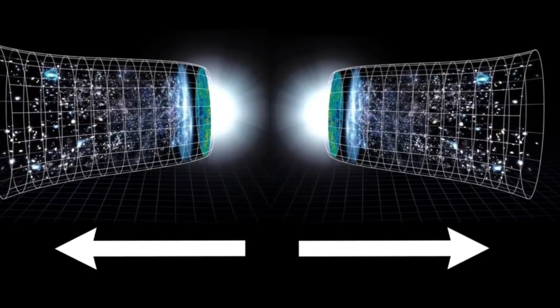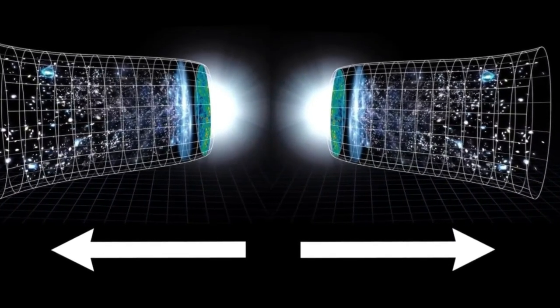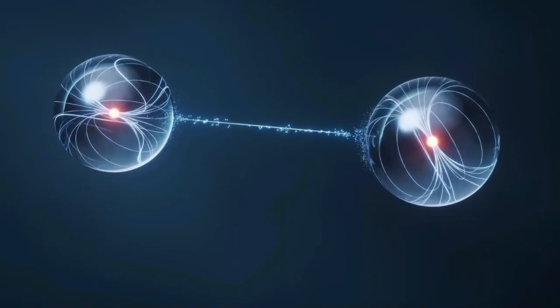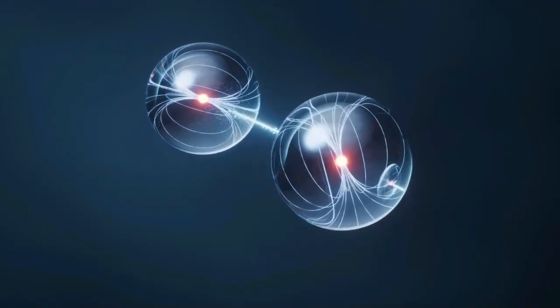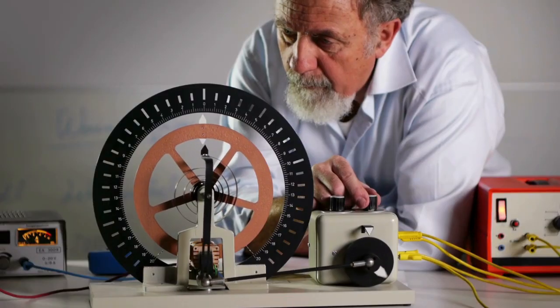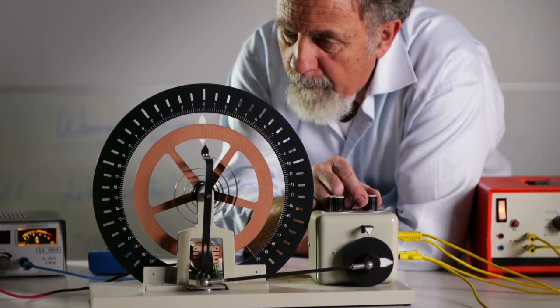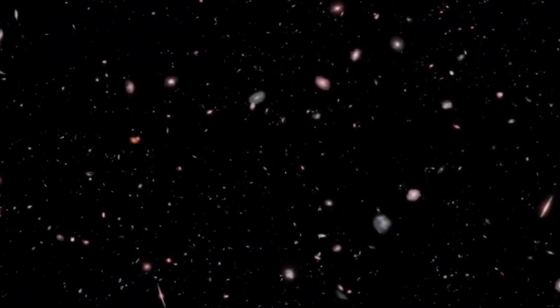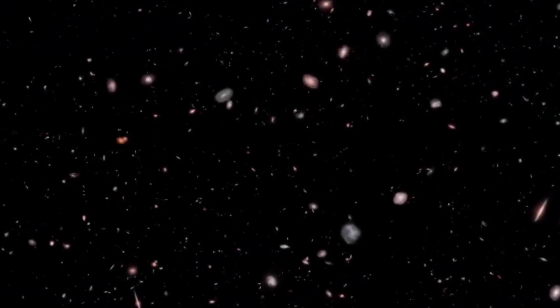But this would need to happen faster than light speed, violating Einstein's special relativity. Physicists call this the horizon problem. Different parts of the universe appear synchronized despite being beyond each other's cosmic horizons.